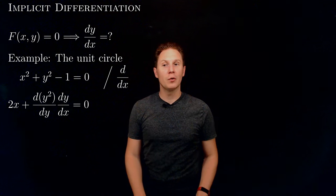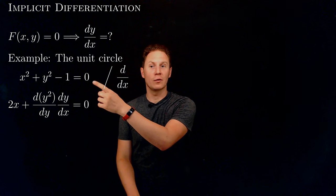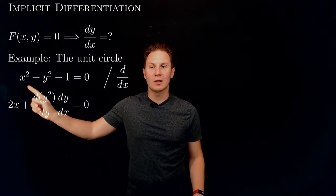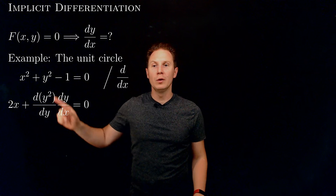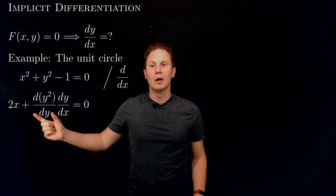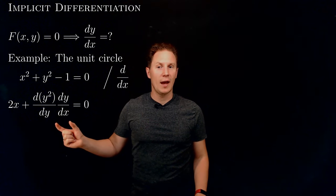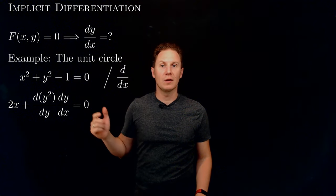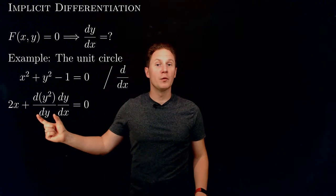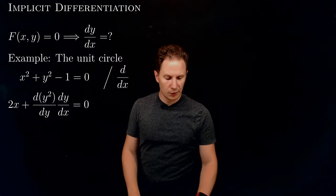I've differentiated both sides of the equation and equated the derivatives. Differentiating the right hand side, which is just a constant, gives 0. Differentiating the left hand side with respect to x: x squared differentiates to 2x by the power rule. y squared as a function of x differentiates — using the chain rule — to the derivative of y squared with respect to y, times the derivative of y with respect to x. The derivative of y squared with respect to y is 2y by the power rule.